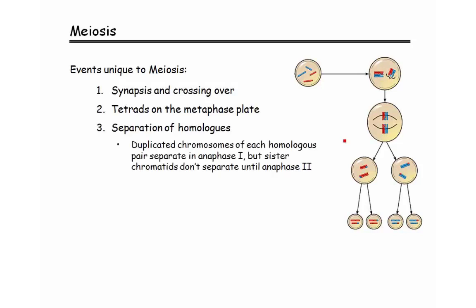The separation of the homologous chromosomes, or homologs, is also unique to meiosis. This separation is what enables the reduction in the number of sets of chromosomes — allowing us to go from diploid cells down to haploid cells. This happens during anaphase one, when the tetrads are pulled apart and the two homologous chromosomes are no longer attached to each other. The sister chromatids will separate later, during anaphase two, and it will be non-identical sister chromatids that actually pull apart.